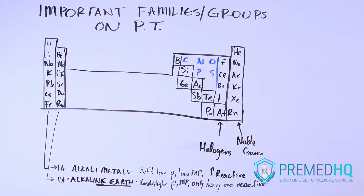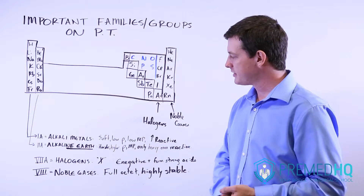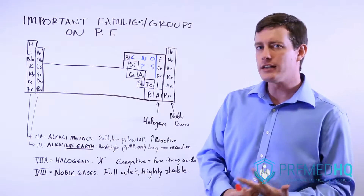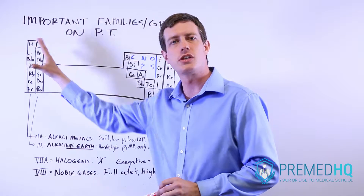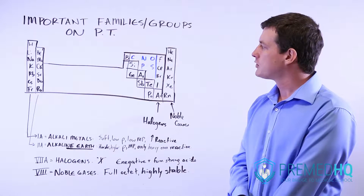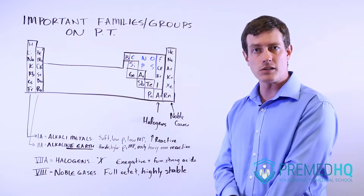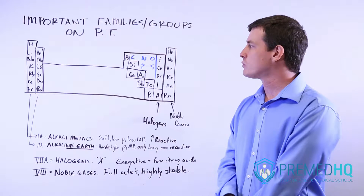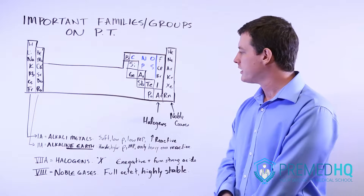The leftmost column is known as the alkali metals, noted for having a very soft consistency, low density, low melting point, and being highly reactive — because all they need to do is lose one electron to reach that stable noble gas configuration. Alkali metals such as sodium and potassium are very important in physiology, playing a big role in the action potential in neurology as well as kidney function and renal conditions.